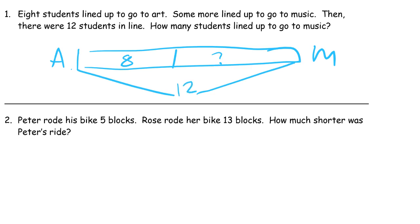This looks just like a number bond, where you've got a whole and two parts, and you know one of the parts but not the other. So I'm going to take the whole — twelve — and subtract one part, and I'll find out what the other part is. Twelve minus eight is four. Four students lined up — I'm going to box that because that's the answer. So four students went to music.